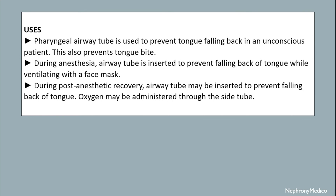Uses: the pharyngeal airway tube is used to prevent the tongue from falling back in an unconscious patient, and it also helps prevent tongue bite during anesthesia. The airway tube is inserted to prevent falling back of the tongue, or when ventilating with a face mask.